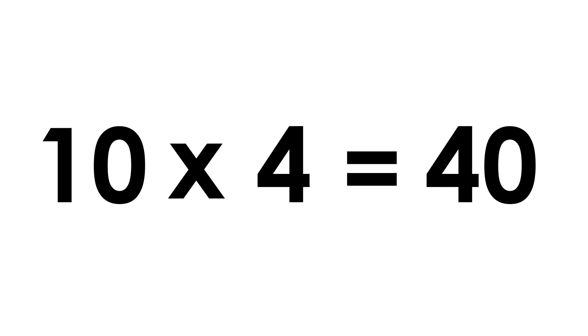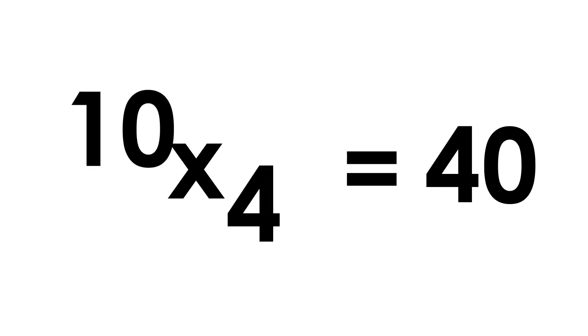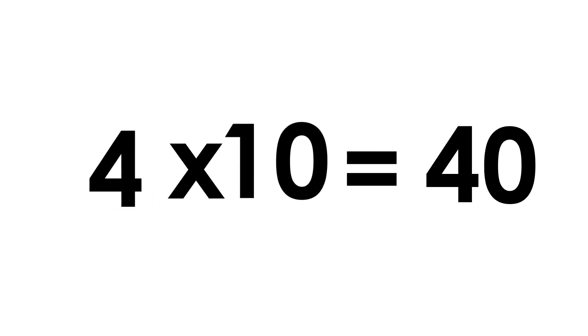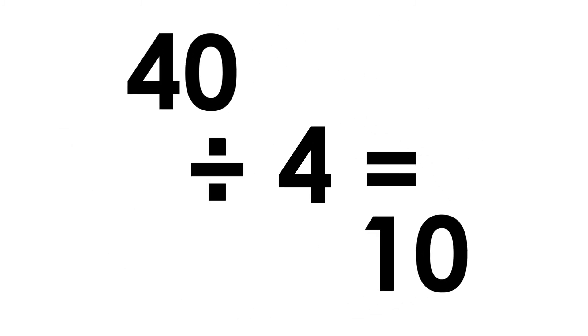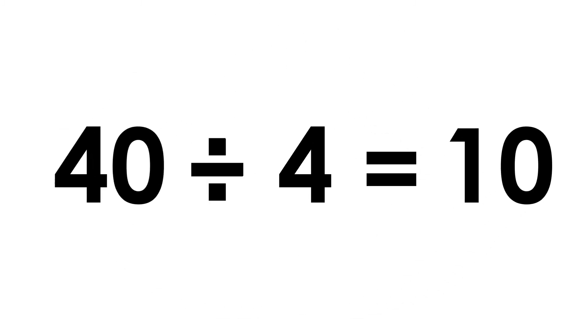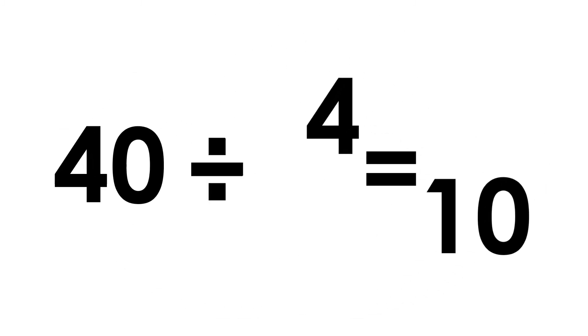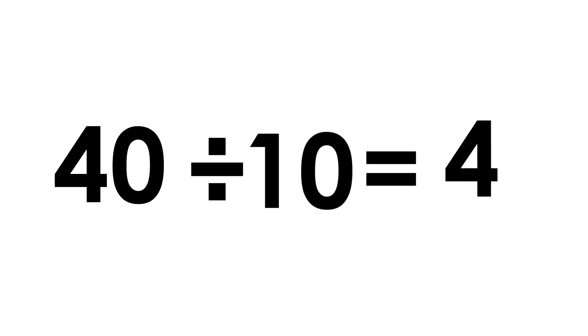Ten fours are forty. Four tens are forty. Forty divided by four is ten. Forty divided by ten is four.